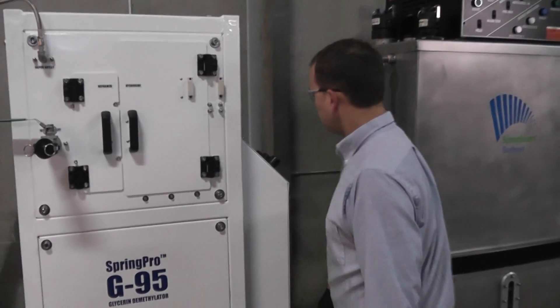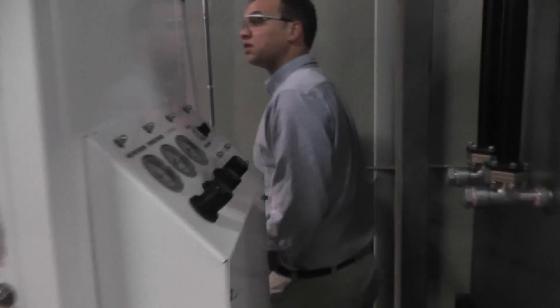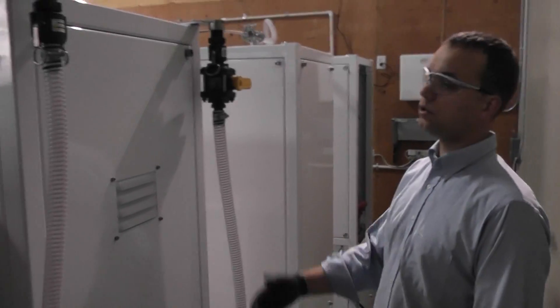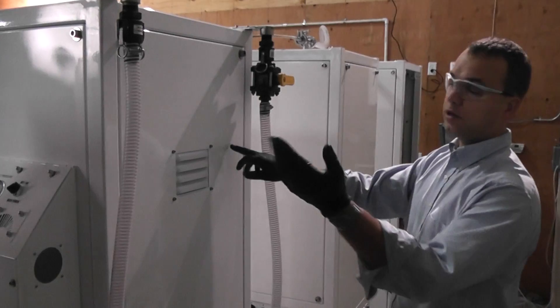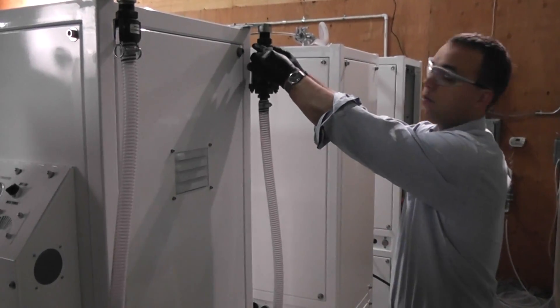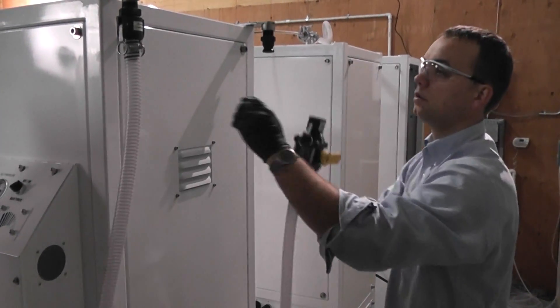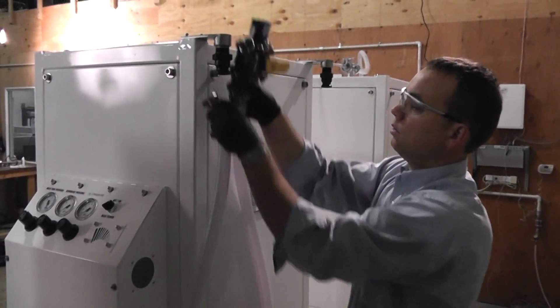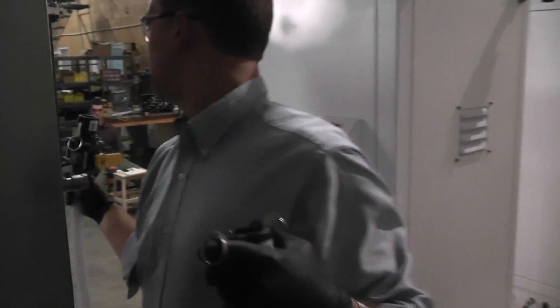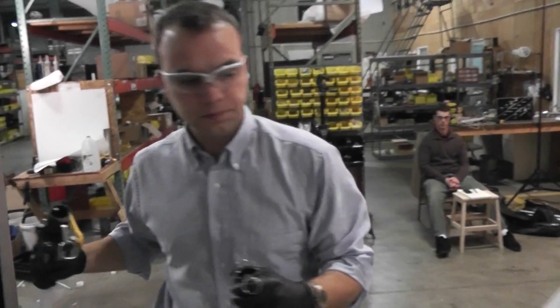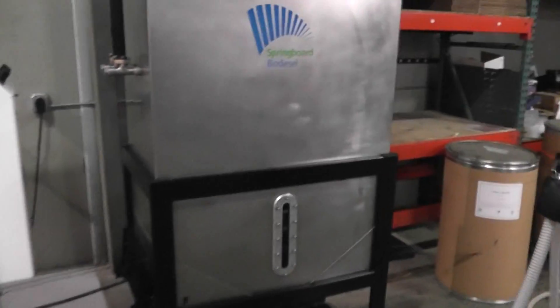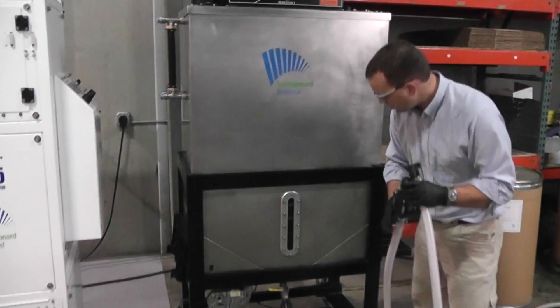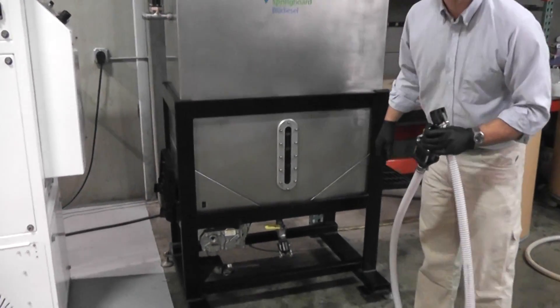On the back side of this machine, we have the storage place for our transfer hose. This is the hose to connect between our G95 and, in this case, we're connecting to a BioPro that has glycerin in the bottom of it. On this BioPro 380, we just ran the reactions. We've got about 22 gallons of glycerin, roughly.